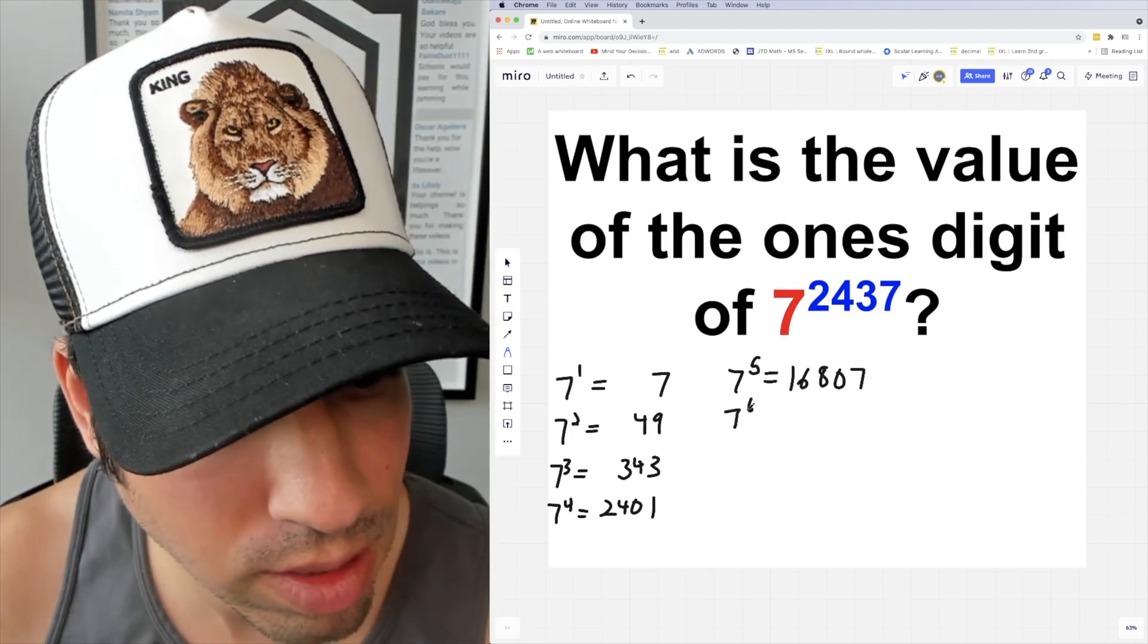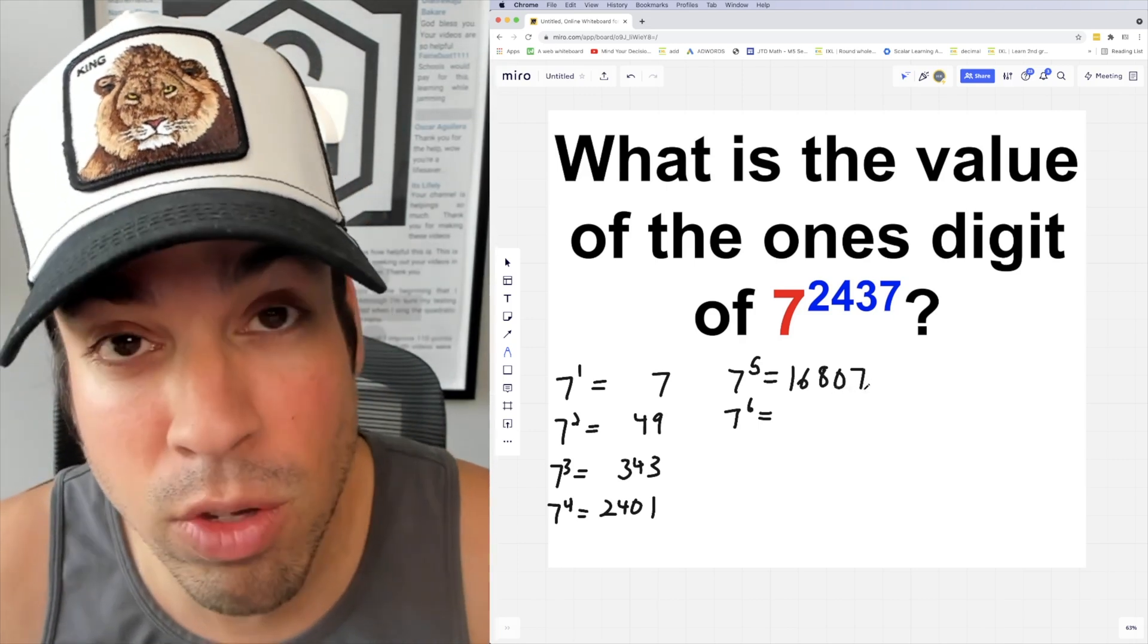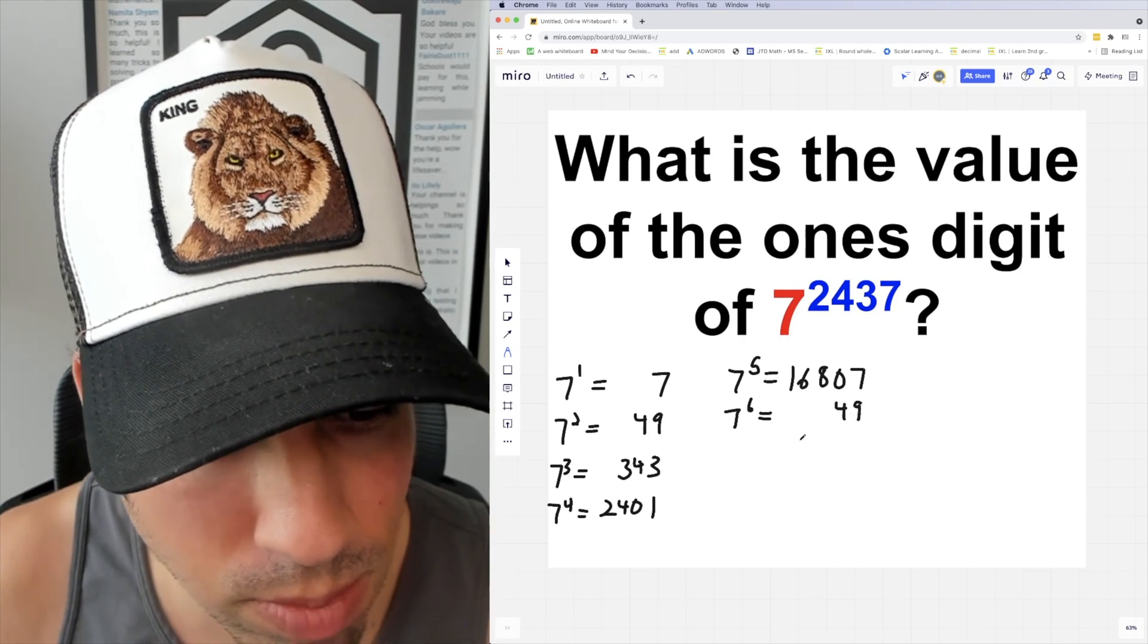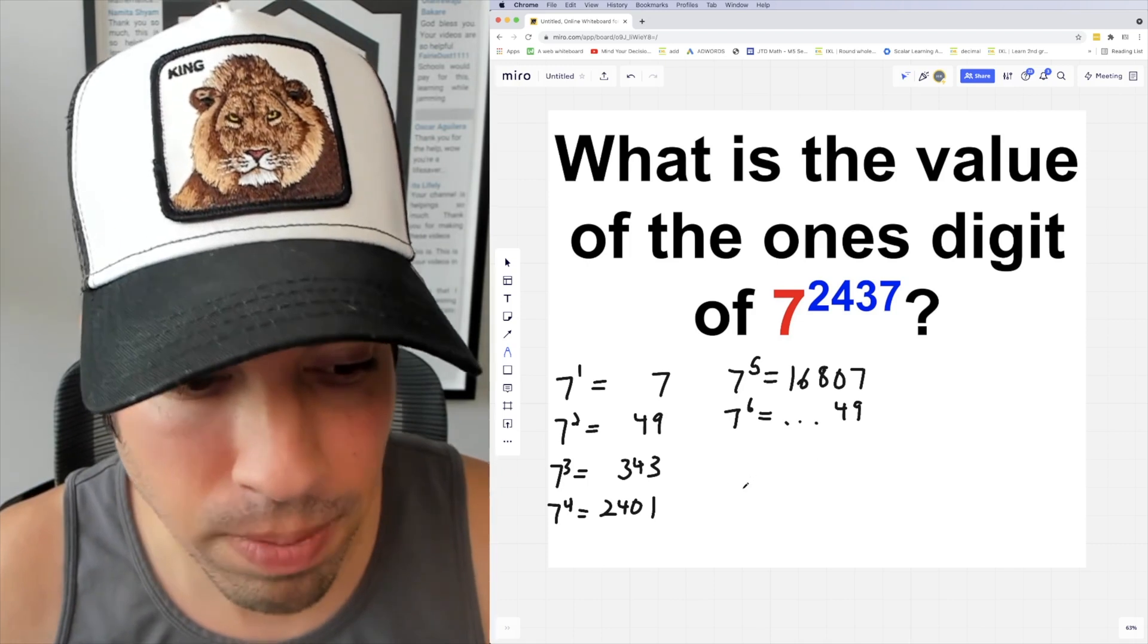Now for 7 to the sixth, I don't really care about the rest of the digits, but I know that when I multiply this value again by 7, the last two spots are going to be 49, which now seems like there's a pattern occurring again.